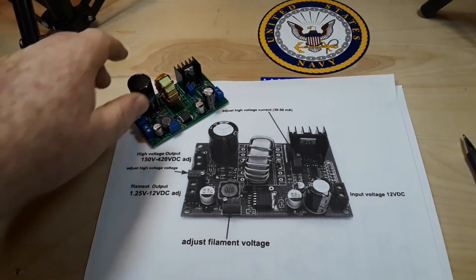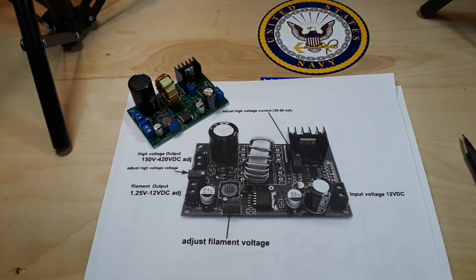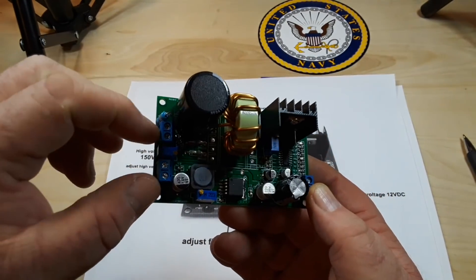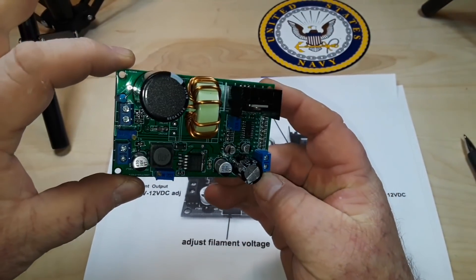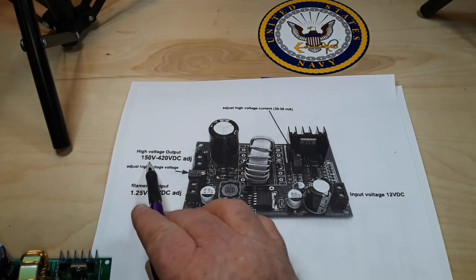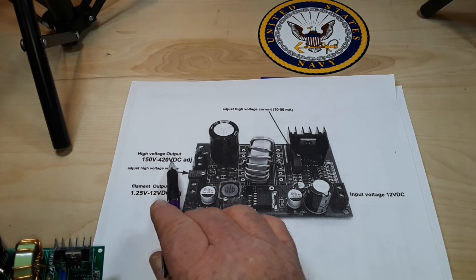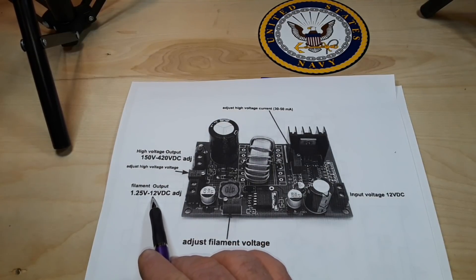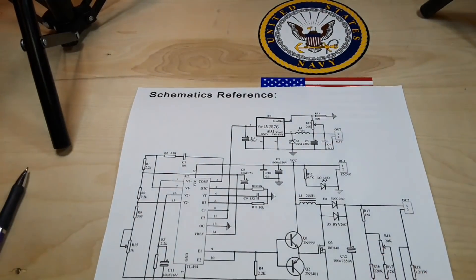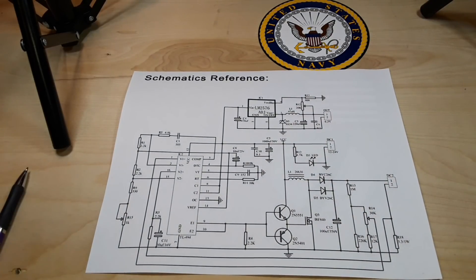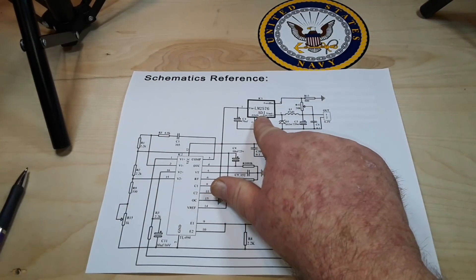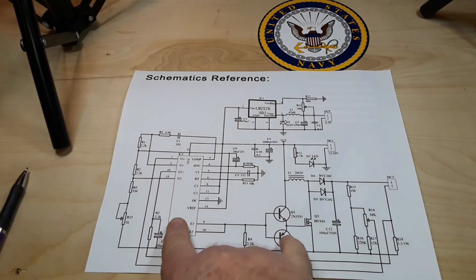I stumbled across this thing on Amazon searching for high voltage DC power supplies. This is specifically made for this application. We have our 12 volt DC input here, and two outputs: 150 to 450 volts DC for our B+, and a filament voltage — also known as heater voltage — to heat up the tube. Looking at the schematic, it's basically a buck-boost converter. The LM2576 is the buck converter, and there's another chip that appears to be the boost converter.